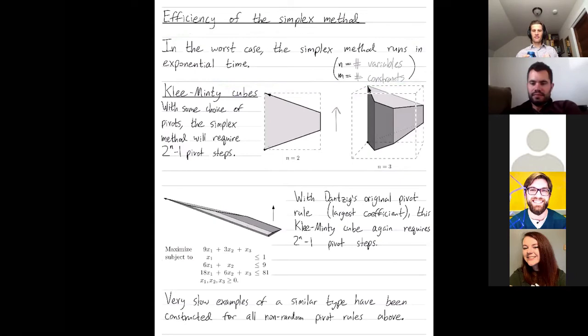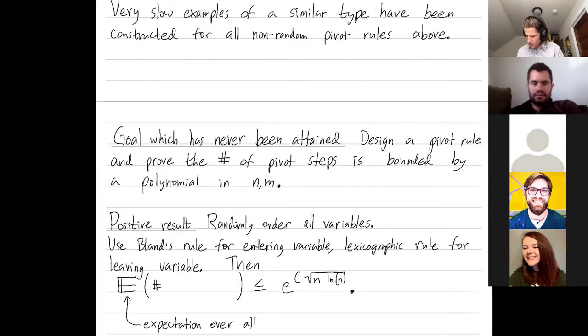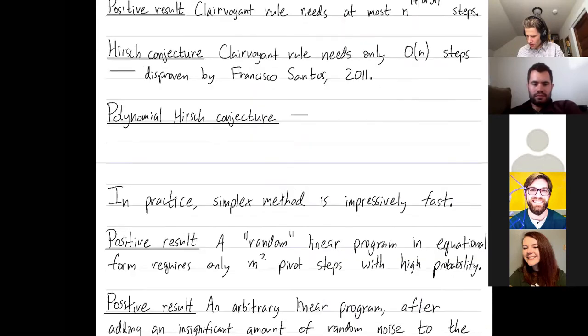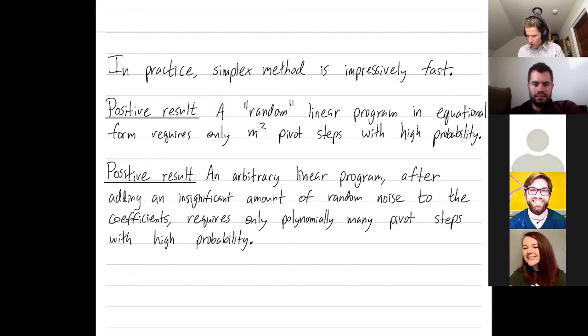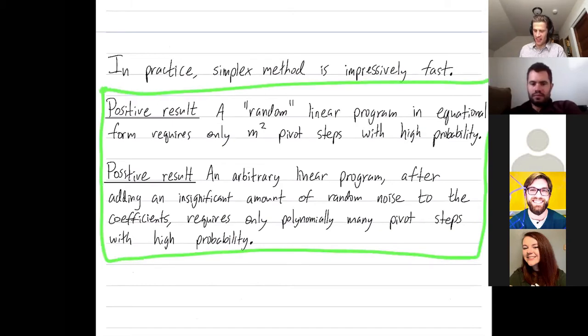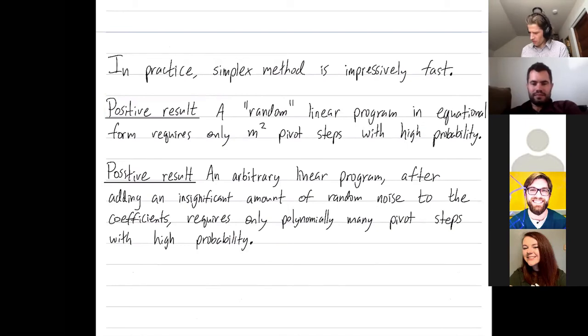Have there been examples for random pivot rules, where the expected time to solve is also very slow? Or is random just much harder to break? Yeah, I think random is much harder to break. I'll end with two positive results saying that random is very fast. So let me just go into them now.